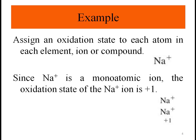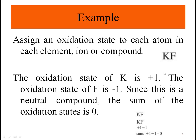Next, for Na⁺: this is a monoatomic ion, so the oxidation state of Na⁺ is plus one. Then for KF: the oxidation state of K is plus one and fluorine is minus one. Since this is a neutral compound, the sum of the oxidation states has to be zero — plus one minus one equals zero.